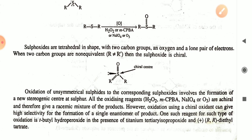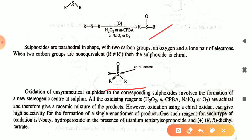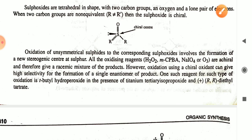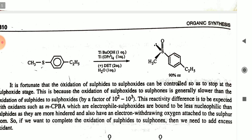Sulfoxides have a tetrahedral shape with two carbon groups, one oxygen, and a lone pair on sulfur. When the two carbon groups are non-equivalent (R ≠ R'), the sulfur becomes a chiral center. MCPBA, H₂O₂, and O₃ are good oxidizing agents. The oxidation of tert-butyl hydroperoxide in the presence of titanium tetraisopropoxide and (+)-diethyl tartrate gives 90% ee of sulfoxide.